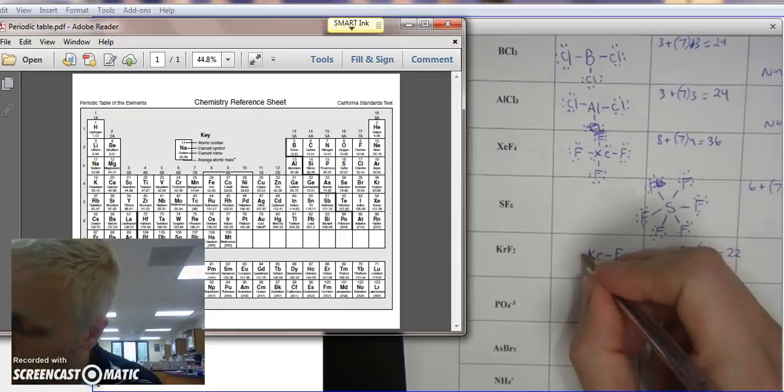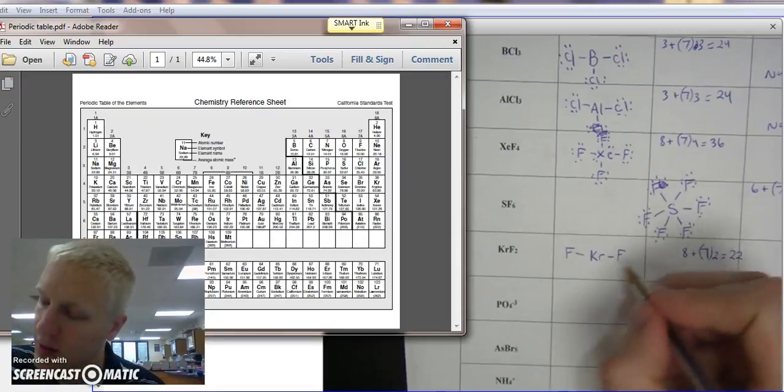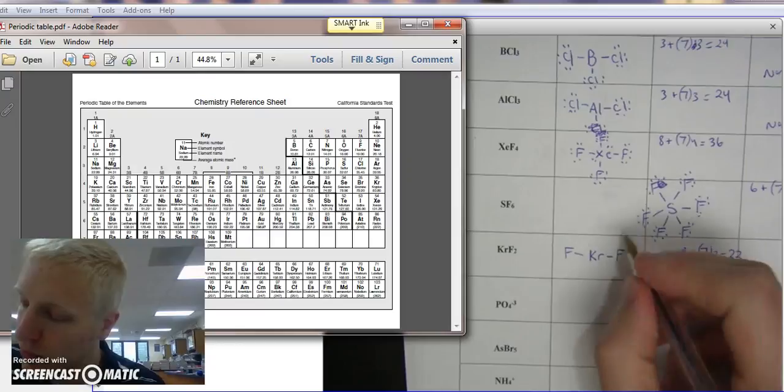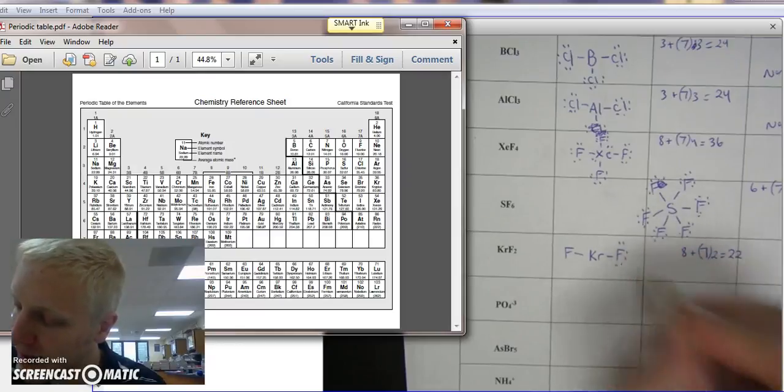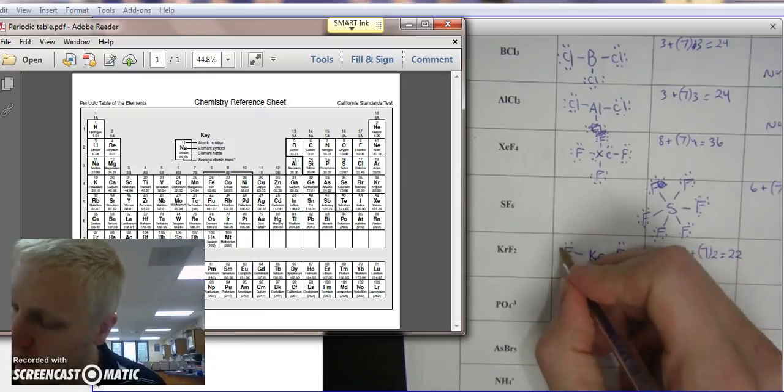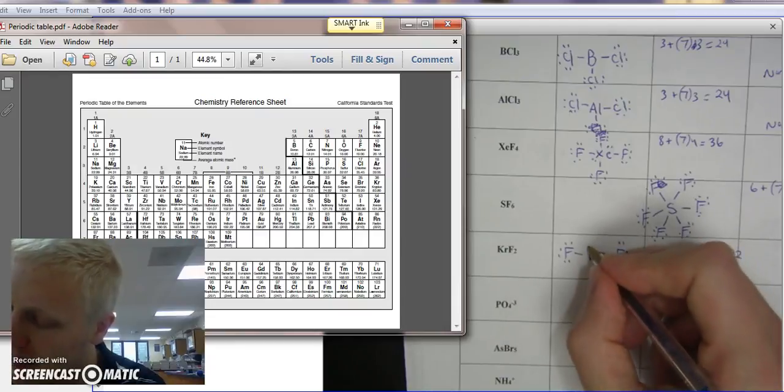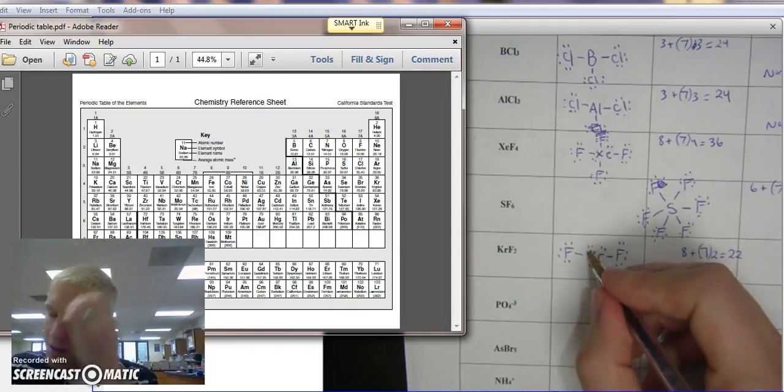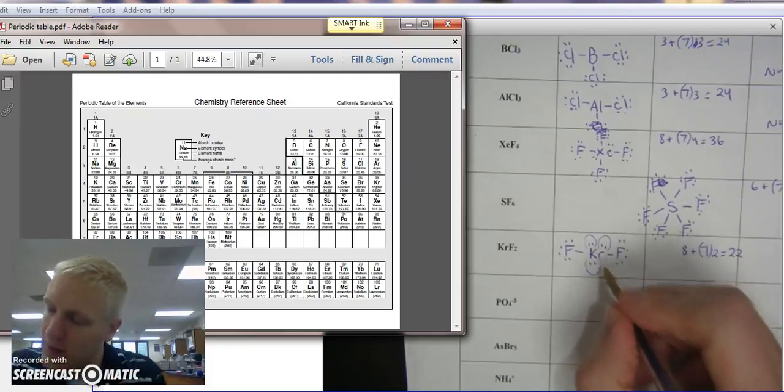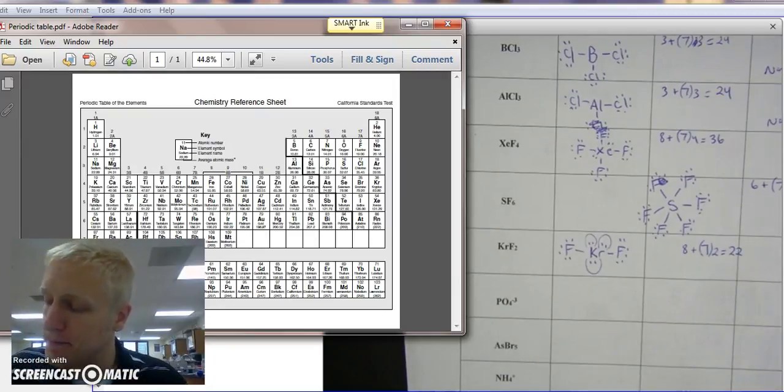And we have 2 fluorines, each with 1 bond, at least. [counting from 2 to 22]. So it has 3 lone pairs and 2 bonds. And that is KrF2.